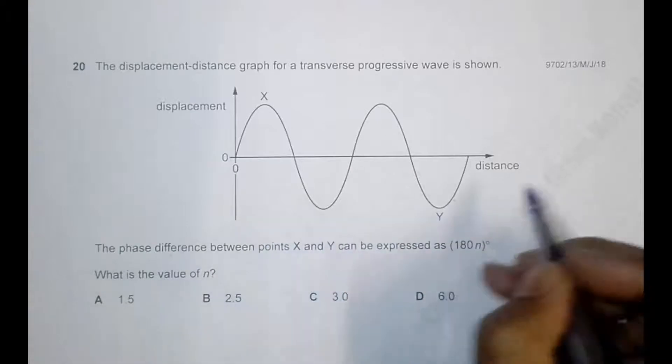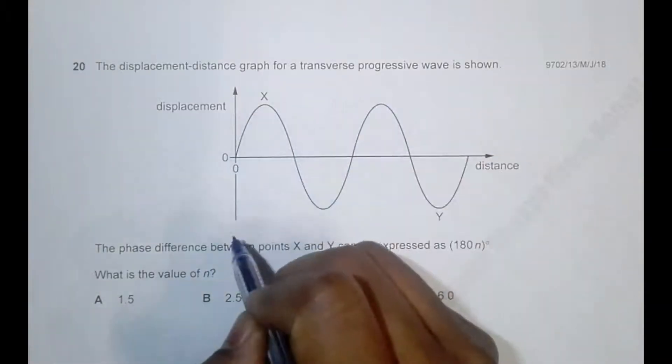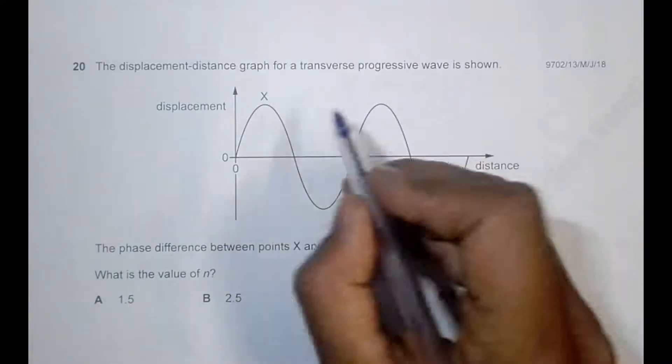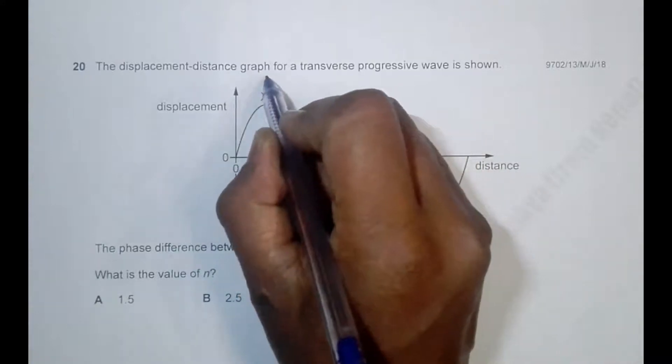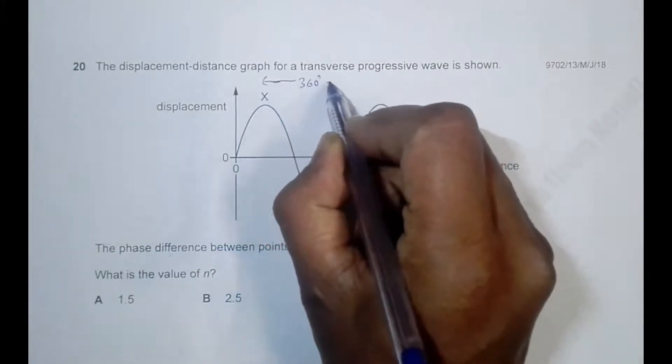So here what we know is, if it is from X to this point, the phase difference is 2 pi, which is equal to 360 degrees. So from here to here it is 360 degrees, from